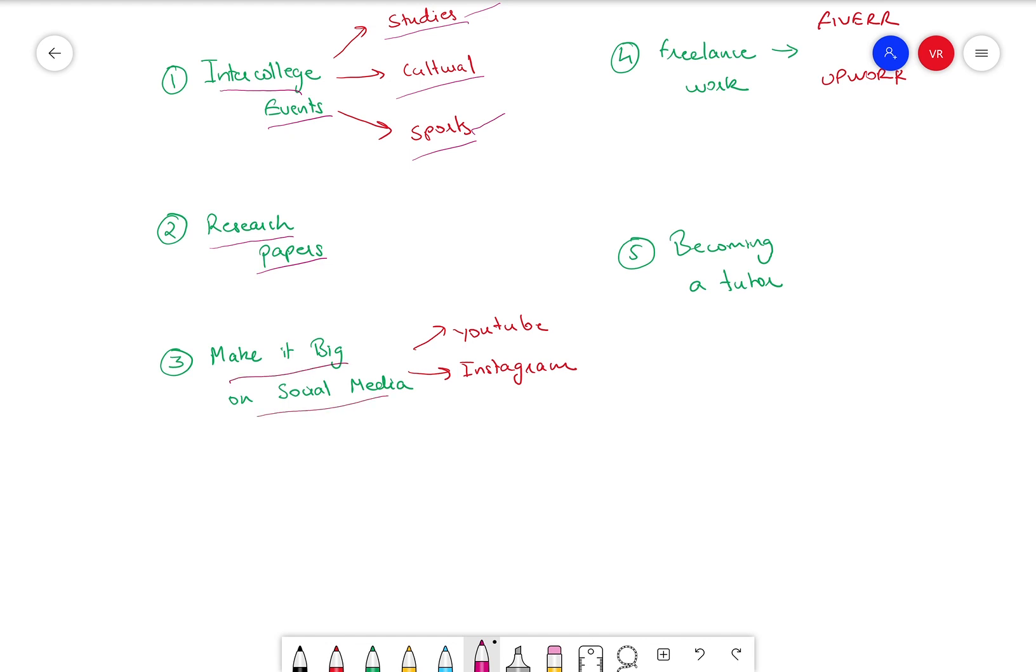Third one is make it big on social media. So me having about 950 subscribers on YouTube, I haven't earned one rupee yet. So you need to have like a lakh or maybe 10 lakh subscribers and a good amount of views for you to make a decent amount of money out of YouTube.